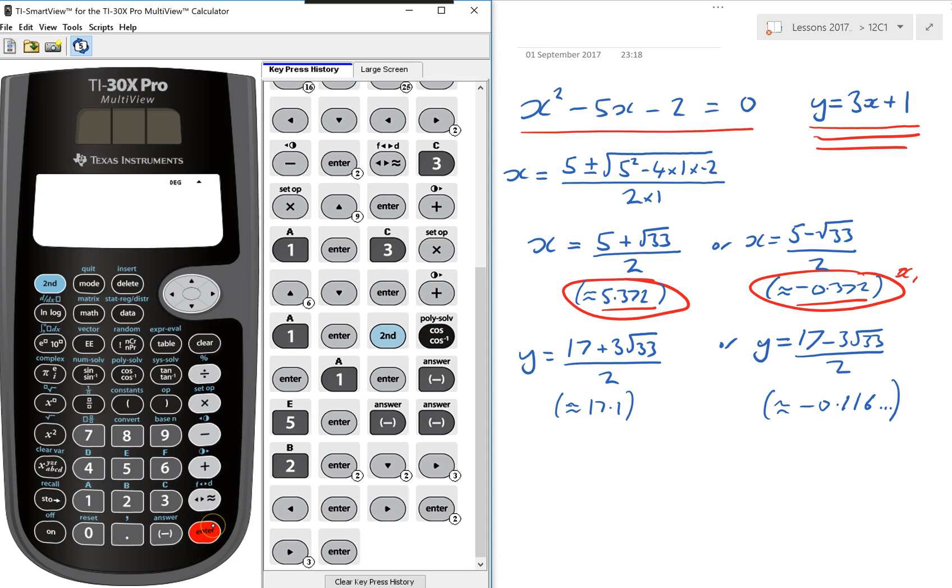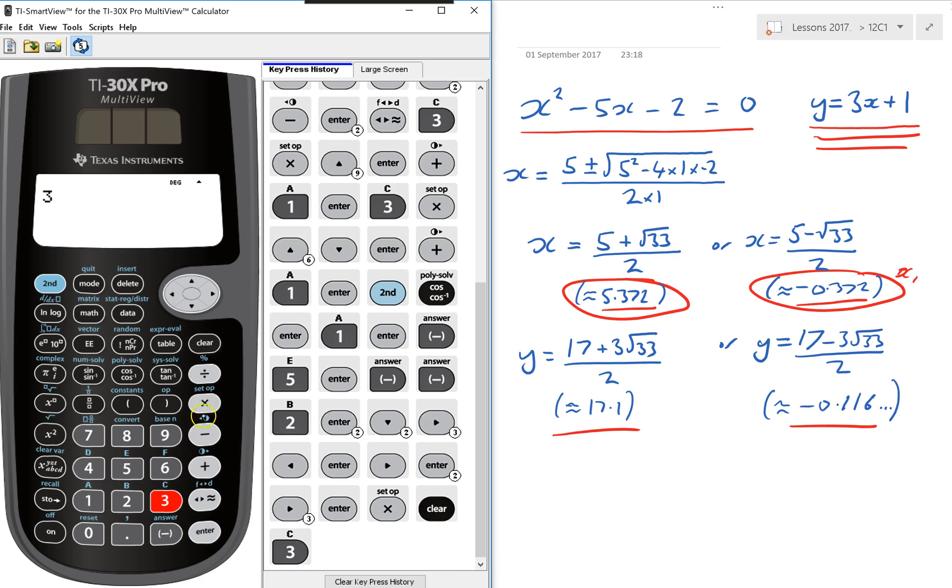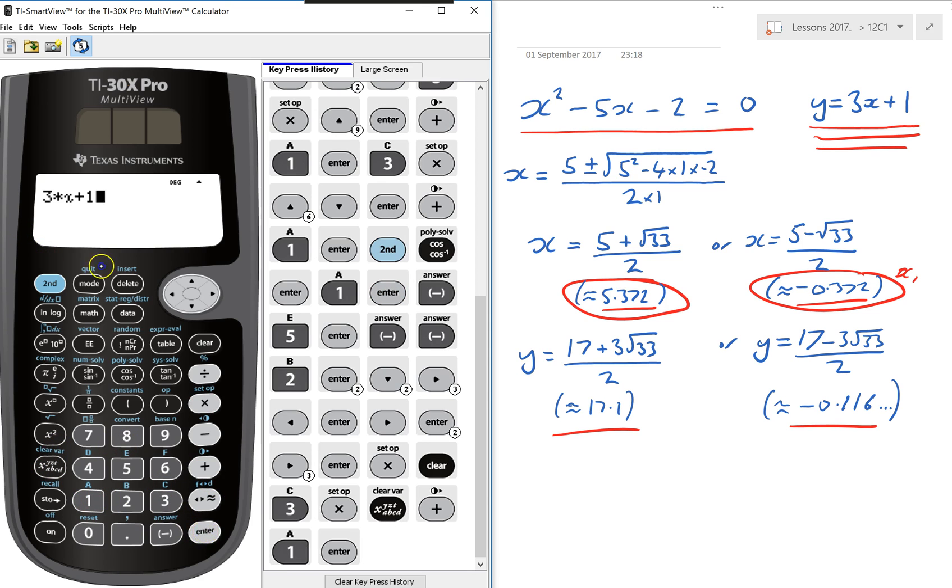And now I can get these two values, because I can just do 3 times x. So I can do 3 times, and put my x, click that button, plus 1. And that will give me this one here, the 17.1.